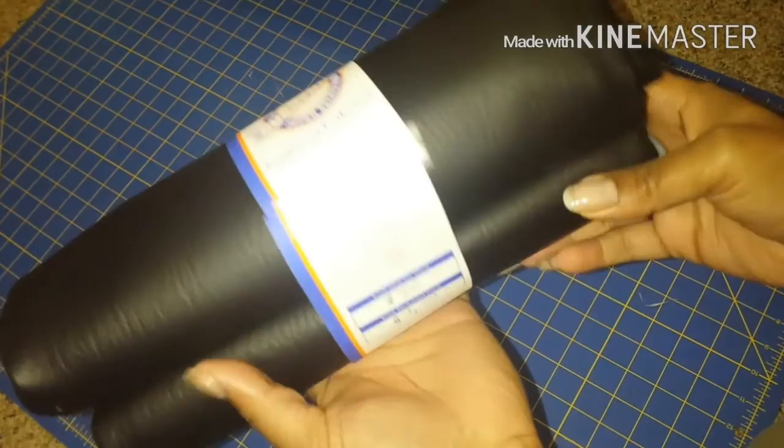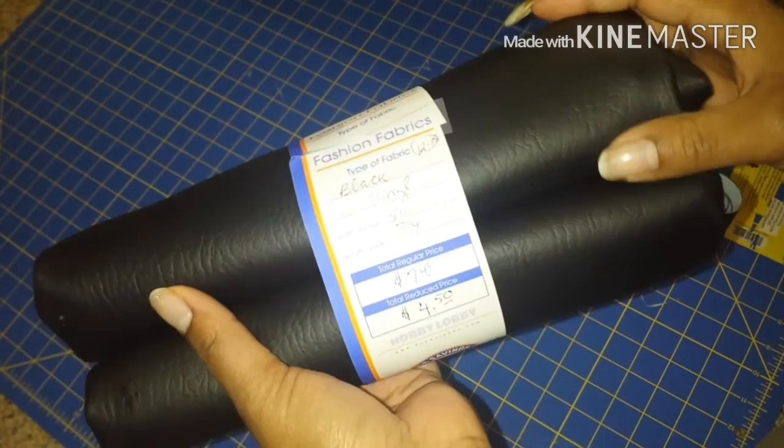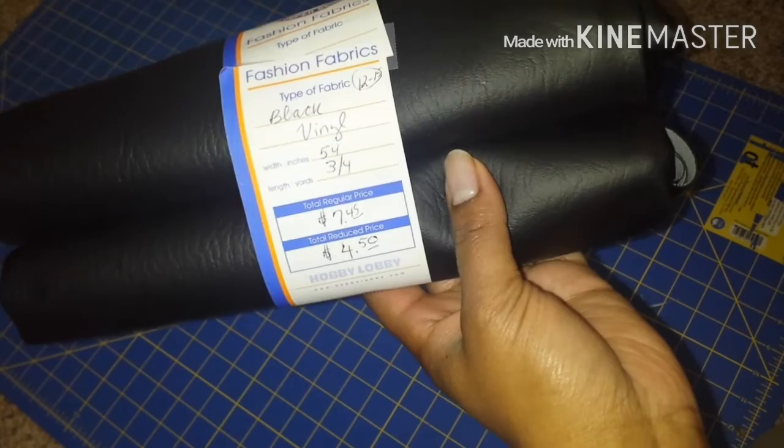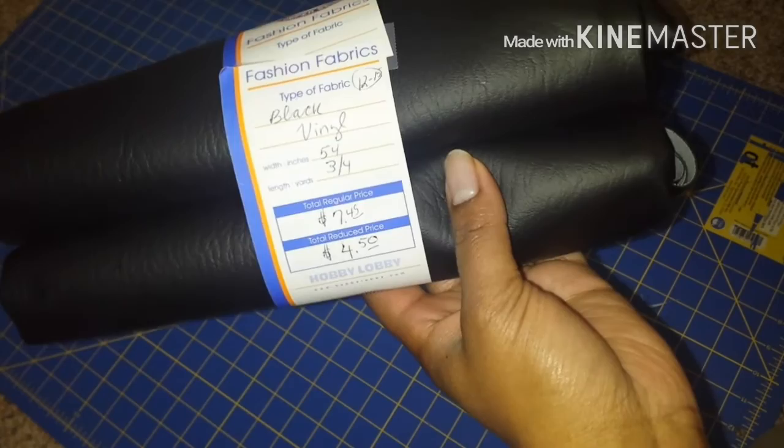Now this is a black vinyl fabric. It looks like faux leather, it's not. It was got from Hobby Lobby. It was a remnant piece. This is three quarters of a yard at 54 inches wide, and I got it for $4.50. There's actually plenty here in case I make a boo-boo, which hopefully we won't do that.